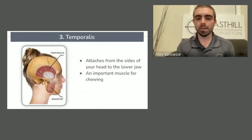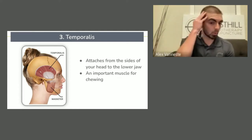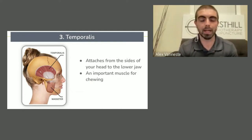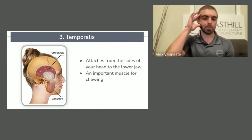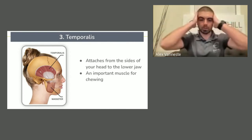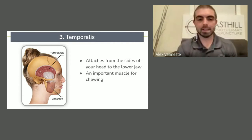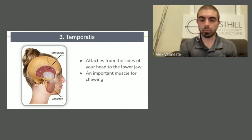Number three is your temporalis muscle — a jaw muscle. It attaches from the side of your head down to the lower jawbone and is very important for chewing. If you open your jaw and place your hand on the sides of your head, just open and close your mouth — you can actually feel your forehead kind of expand underneath your palm. That's the temporalis muscle helping to pull you back there.